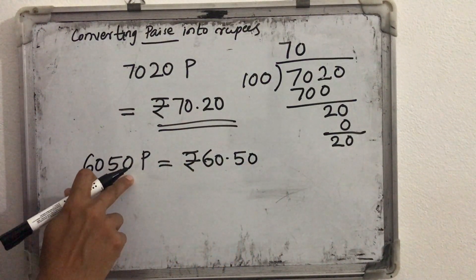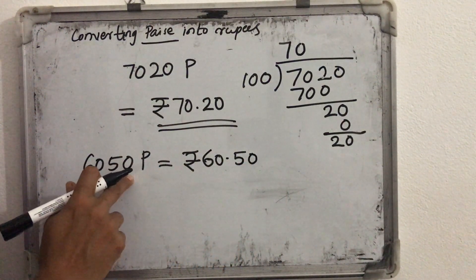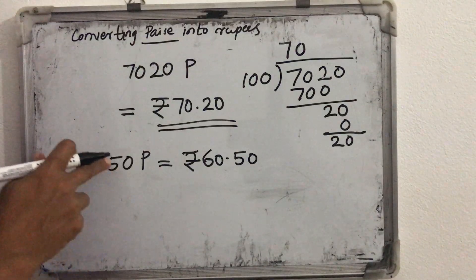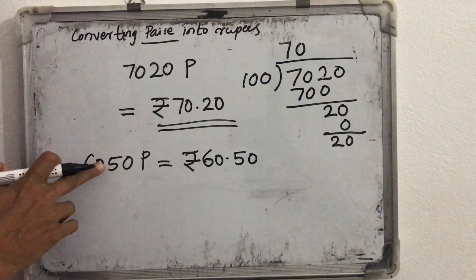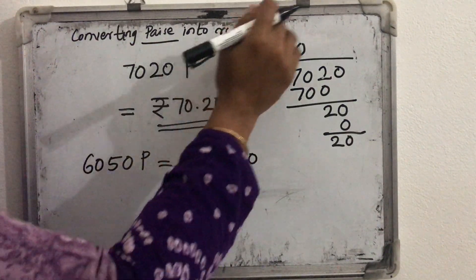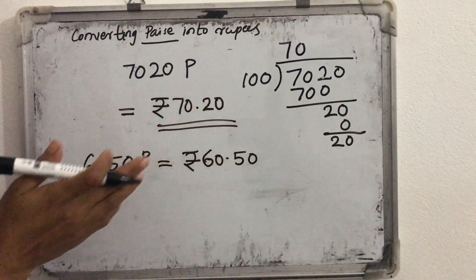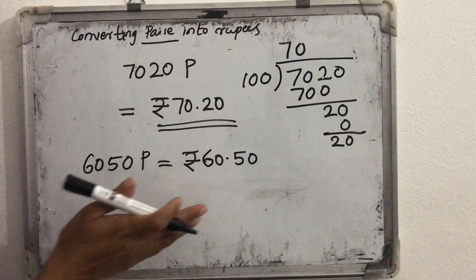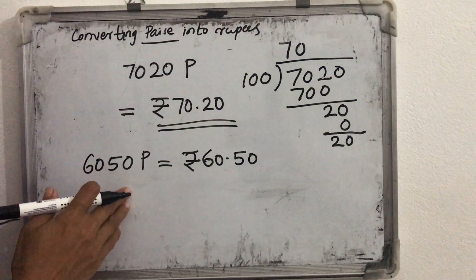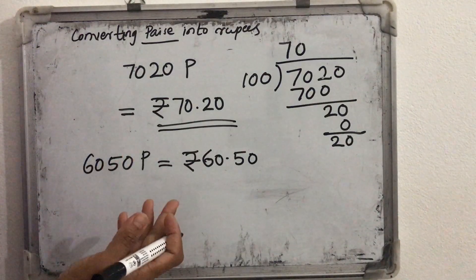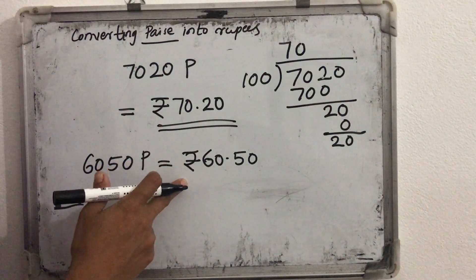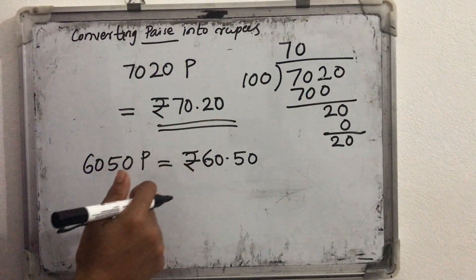Before the last two digits we can insert the decimal point — now without doing this division, we can directly write this. Convert this paise into rupees — so it will be 60 rupees and 50 paise.